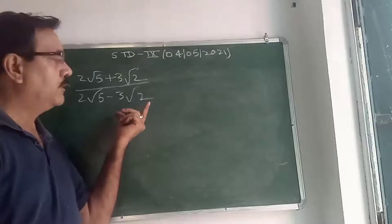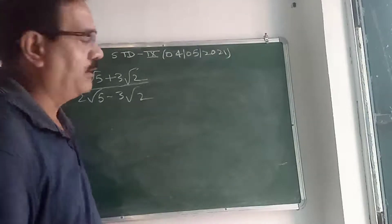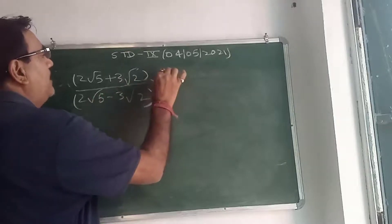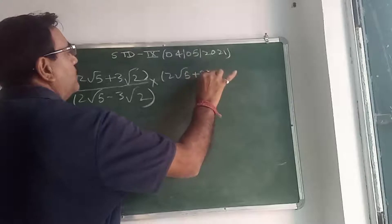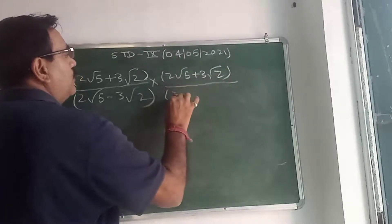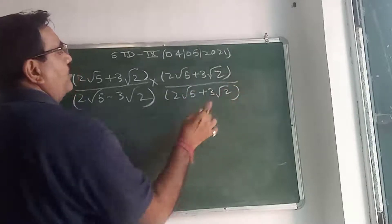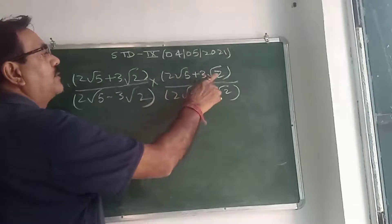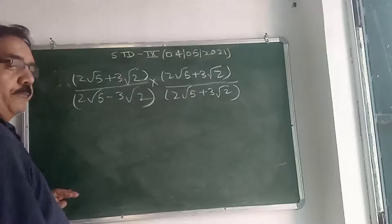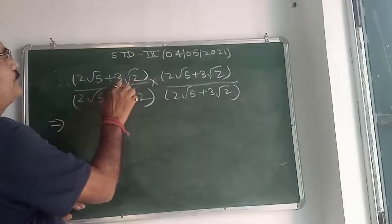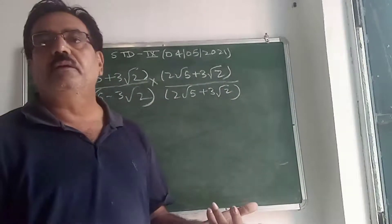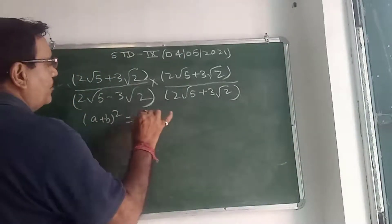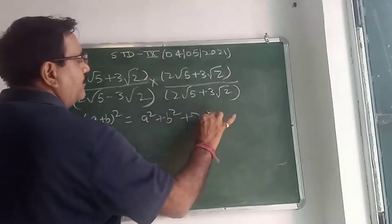Third question: (2√5 + 3√2) divided by (2√5 − 3√2). The denominator is again irrational, so we rationalize it. First put a bracket. Then multiply numerator and denominator by (2√5 + 3√2) — the opposite side of the denominator. The numerator becomes (2√5 + 3√2) × (2√5 + 3√2), which is (A + B)², and the denominator becomes (2√5 − 3√2)(2√5 + 3√2), which is A² − B².